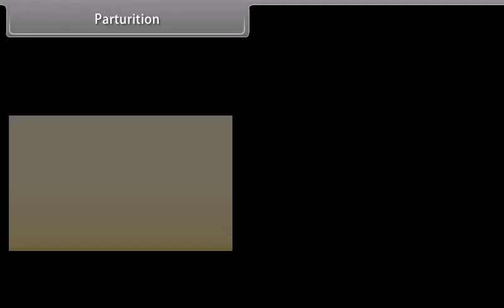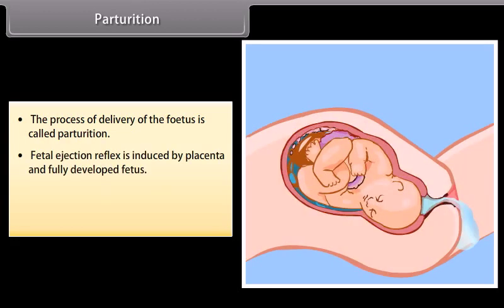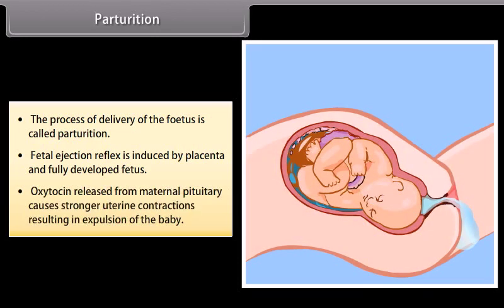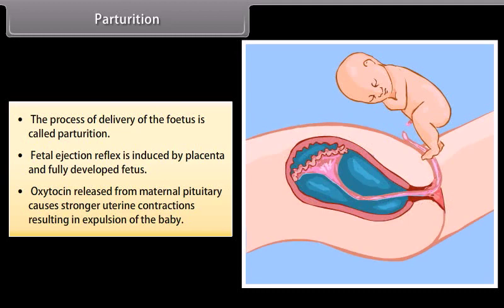Parturition: the process of delivery of the fetus is called parturition. Fetal ejection reflex is induced by the placenta and fully developed fetus. Oxytocin released from the maternal pituitary causes stronger uterine contractions, resulting in expulsion of the baby.